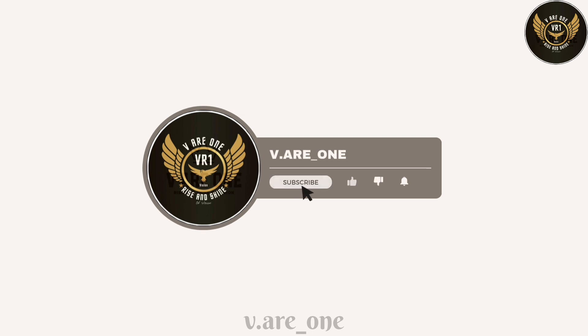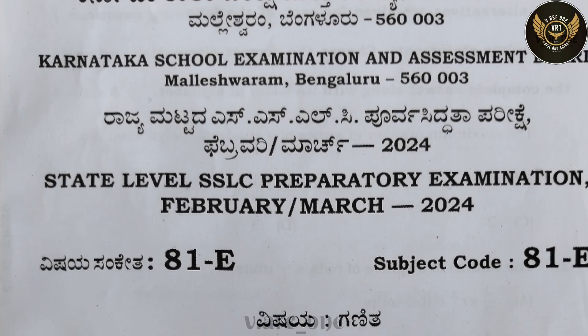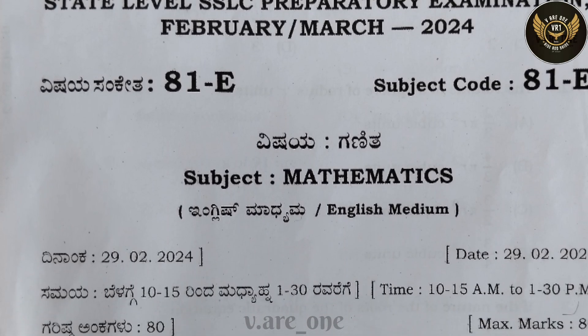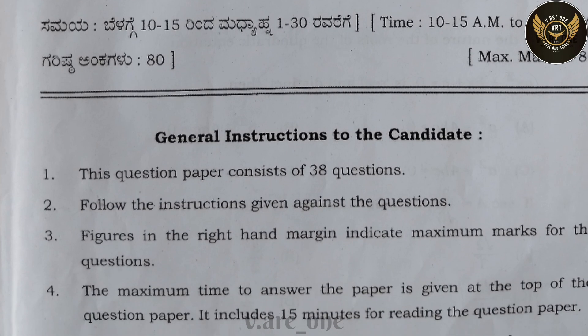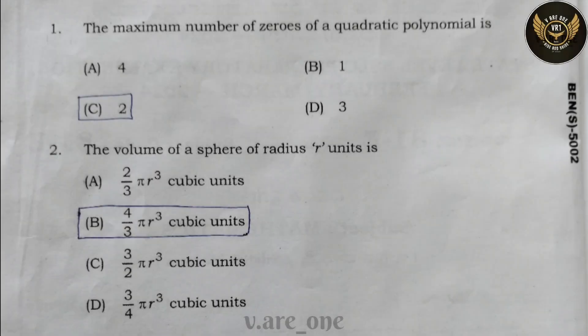Hello guys, welcome to the YouTube channel. Today we are going to discuss the key answers of State Level Preparatory Maths 2020-24. So let us start. First question: the maximum number of zeros of a quadratic polynomial — the correct answer is option C: 2. Second question: the volume of a sphere of radius r units — the correct answer is option B.